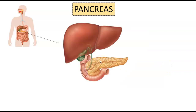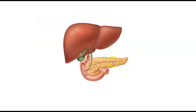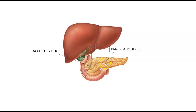Looking at more detailed anatomy of the pancreas, it includes the uncinate area — a part that tucks underneath — as well as a head, neck, body, and tail. In the center of the pancreas there is a duct that drains into the first part of the small intestine called the duodenum; this is the pancreatic duct. There is also a little accessory duct that also drains into the duodenum. These ducts drain the digestive enzymes into the first part of the small intestine to start breaking food groups down.